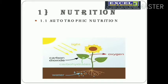In photosynthesis, we use carbon dioxide from the atmosphere and water from the ground, along with available light. By definition, the conversion of carbon dioxide and water in the presence of sunlight into glucose and oxygen is termed as photosynthesis.